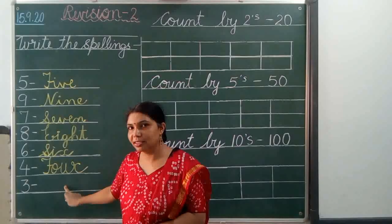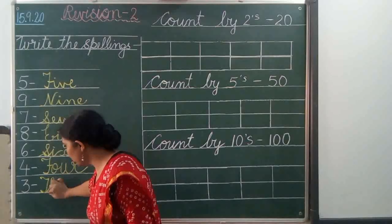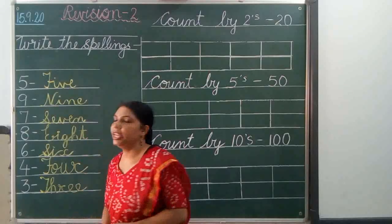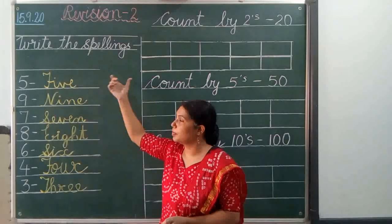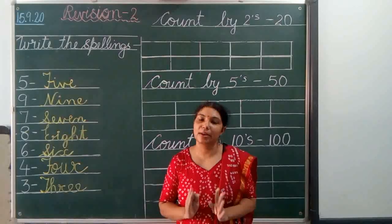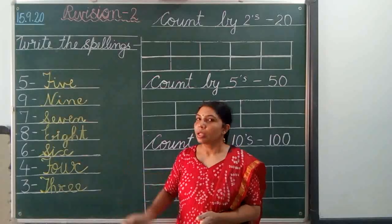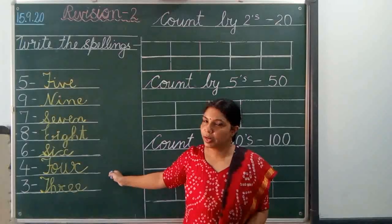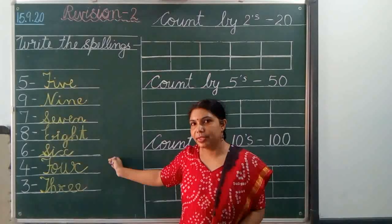This is 3. What is the spelling? T-H-R-E-E, 3. These are only the examples of spellings. The attachment will be sent to you and you have to learn and write and practice more for the spellings. These were the spellings of 1 to 10. These are the mixture of that, and an example of that.